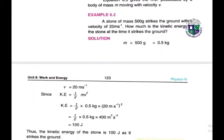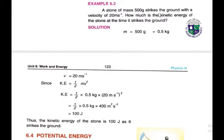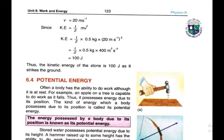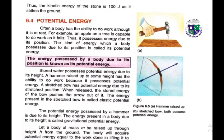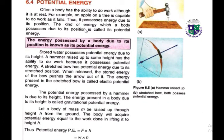Example 6.2: A stone of mass 500 grams strikes the ground with a velocity of 20 m/s. How much is the kinetic energy of the stone when it strikes the ground? Mass = 500 g = 0.5 kg, velocity = 20 m/s. Using KE = ½mv²: KE = ½ × 0.5 × (20)² = 100 joules. The kinetic energy of the stone is 100 joules.